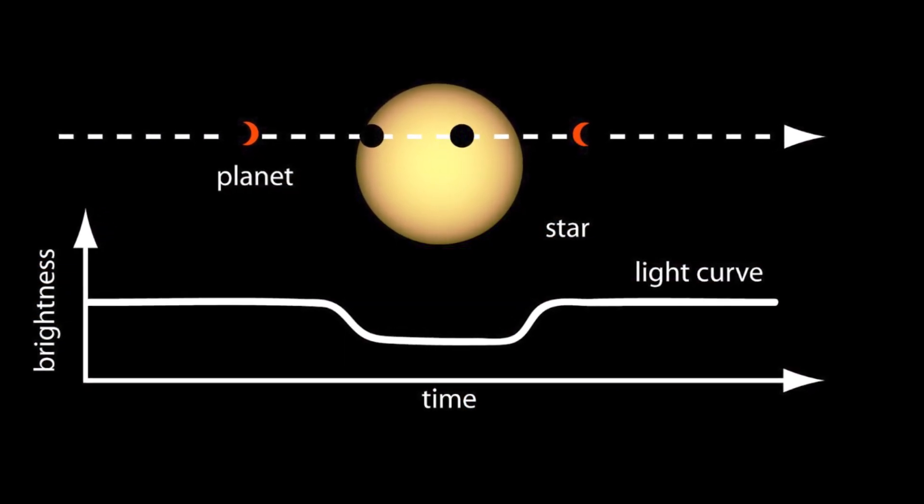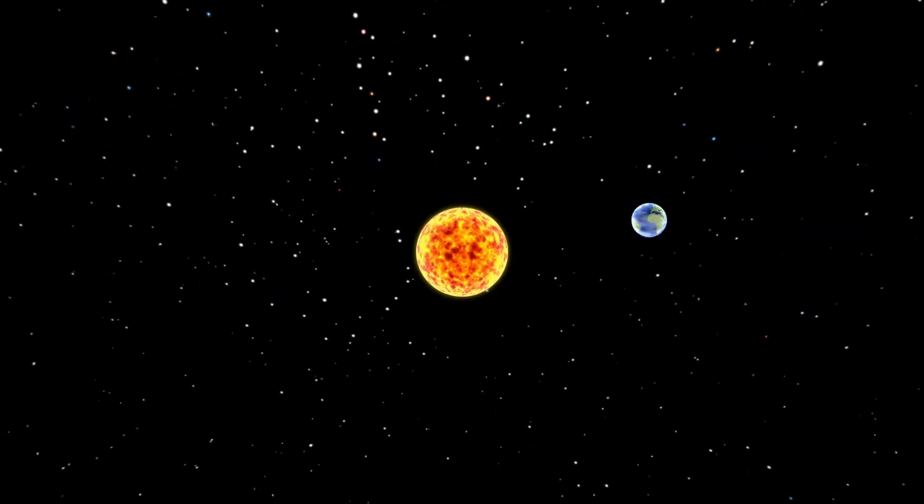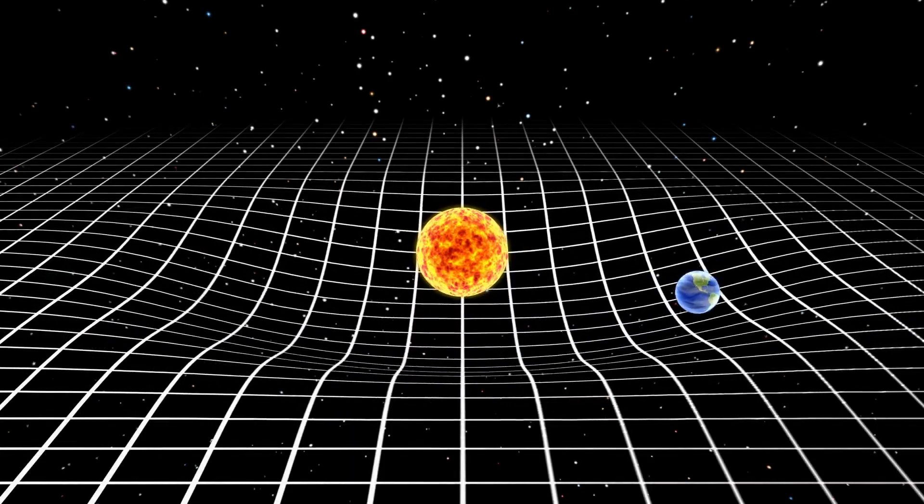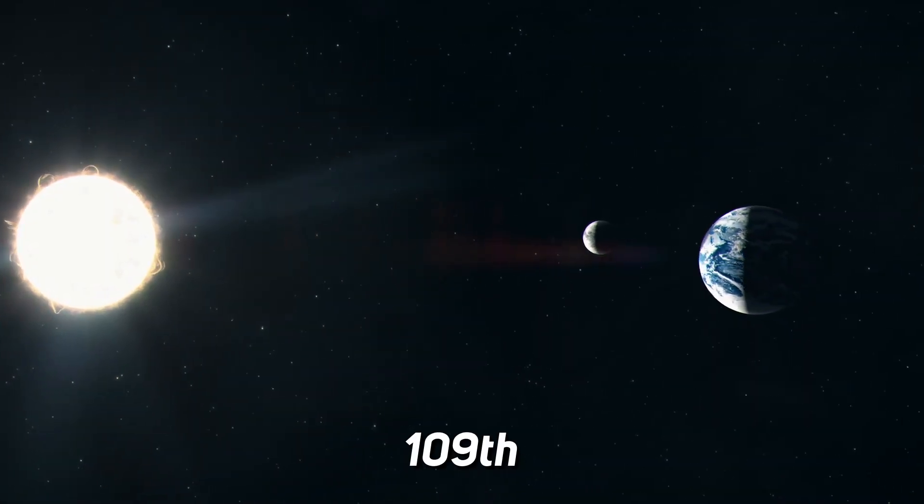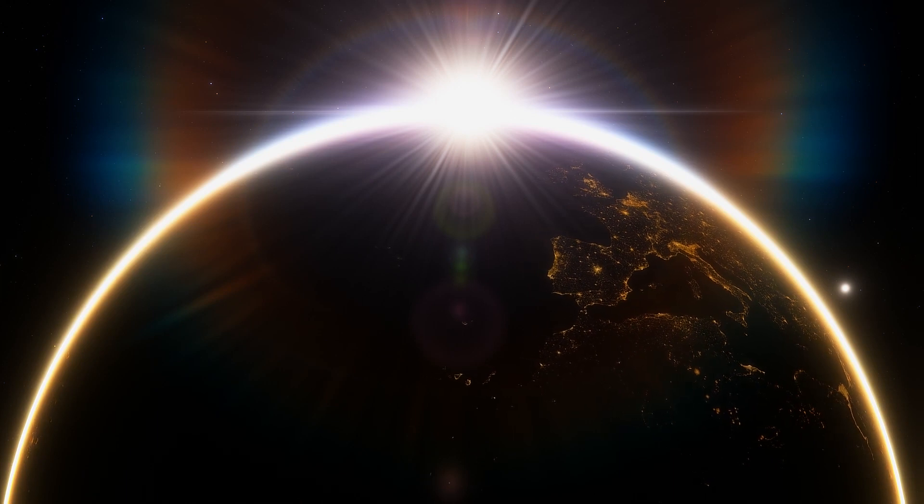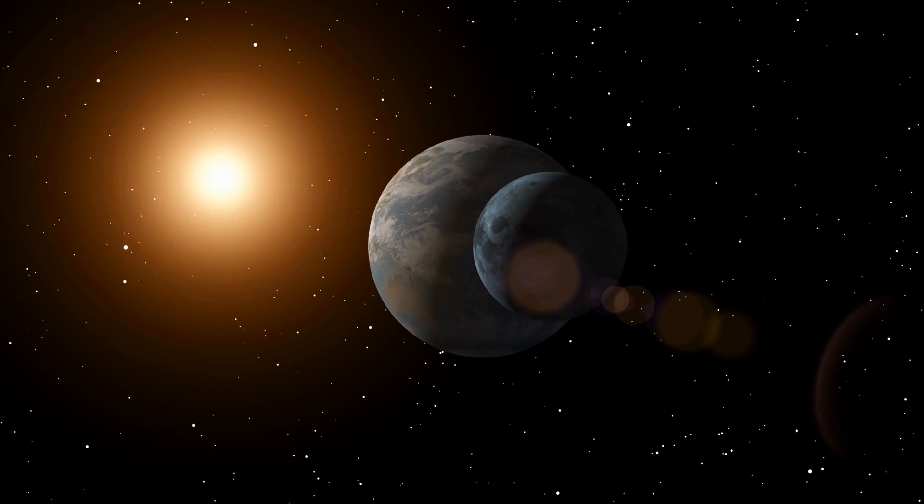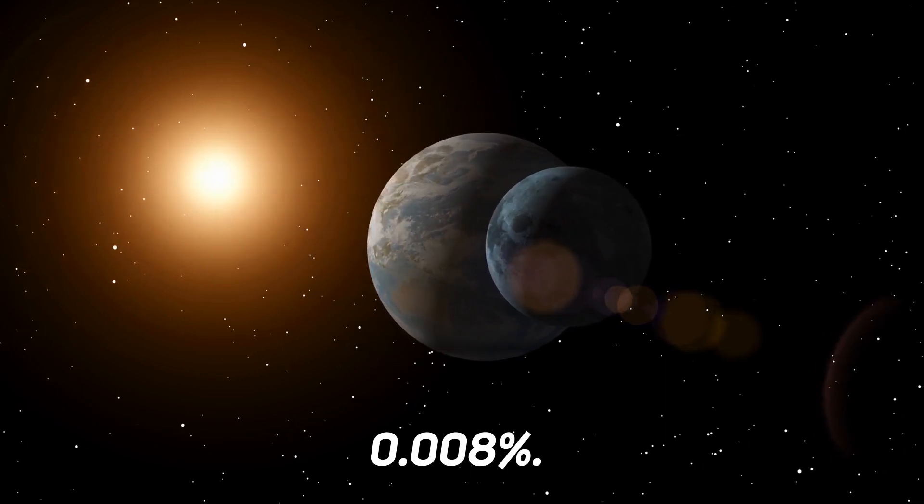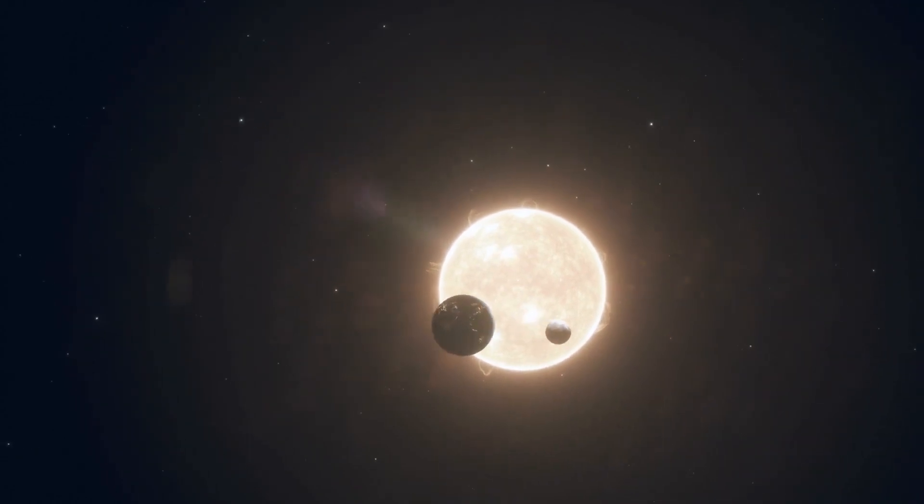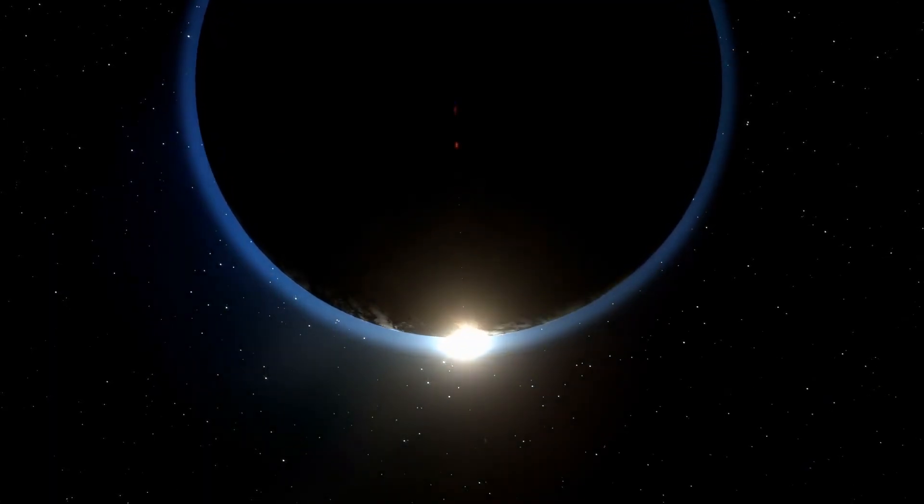detecting the transit of an exosolar planet can be extremely challenging. For instance, the Earth is very small as compared to the diameter of the sun. It is only 1/109th of the diameter of the sun. To an external observer, the passage of Earth around the sun would only dim the sun's light by a factor of 0.008%. This means that Kepler's cameras and mirror system has to be sensitive enough to detect these very little differences in the dimming of the respective star.